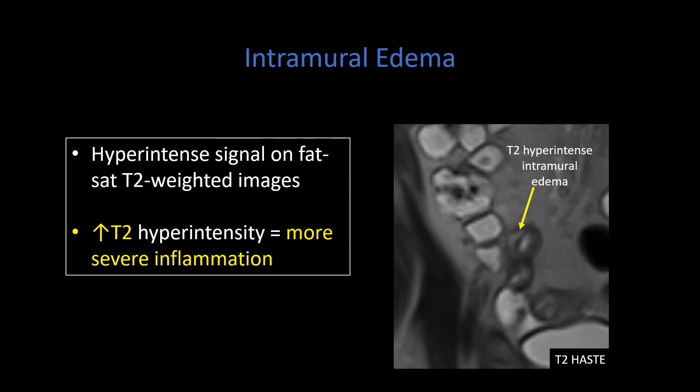When looking for intramural edema on CT, it will manifest as low attenuation of the submucosa resulting in wall thickening. On MRI or MRE, you're looking for T2 hyper-intense signal within the bowel wall corresponding to the submucosa — seen on T2 fat-saturated images or images without fat saturation. There is some thought that the greater the T2 hyper-intensity, the more severe the inflammation.